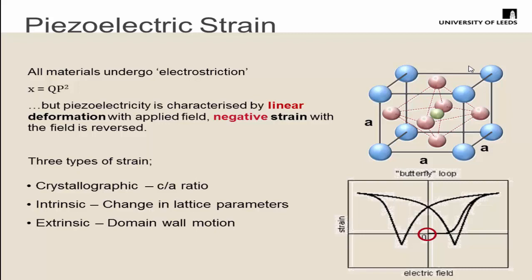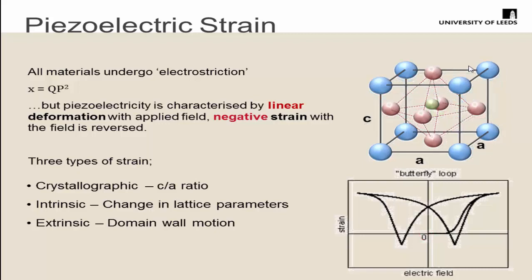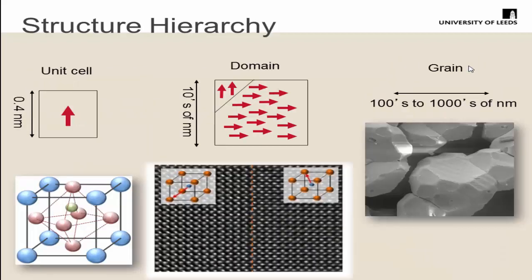Just to define the three types of strain I'll be talking about today: crystallographic strain, the c/a ratio in tetragonal unit cells, and intrinsic and extrinsic. Going from the atomistic view into the physical structure hierarchy — we start with the unit cell, these then form domains, and then we get grains. When the grains are agglomerated, we get our physical ceramic. All the ceramics I'll be talking about will be polycrystalline, but in the project we've been looking at single crystals as well.